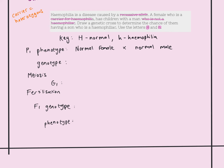Now we attach these alleles onto the X chromosomes, with nothing on the Y chromosome. The female is heterozygous, so she has X superscript H and X superscript h. The male is normal, so he has X superscript H and just a Y chromosome. The Y chromosome is smaller than the X, so there are fewer alleles — there is no space on the Y chromosome for a blood-clotting allele, because hemophilia is a clotting disorder.